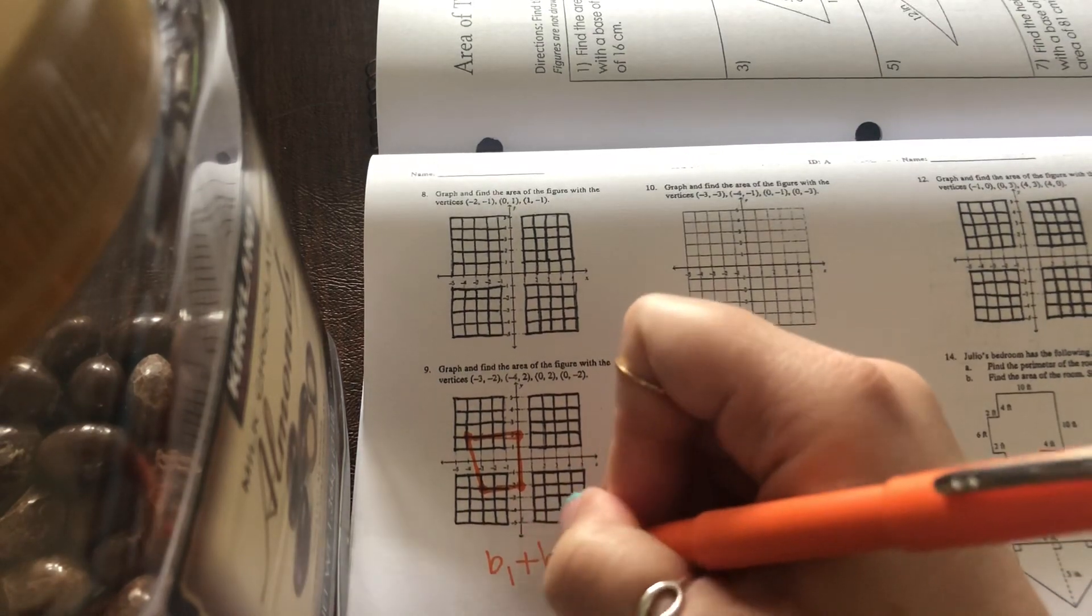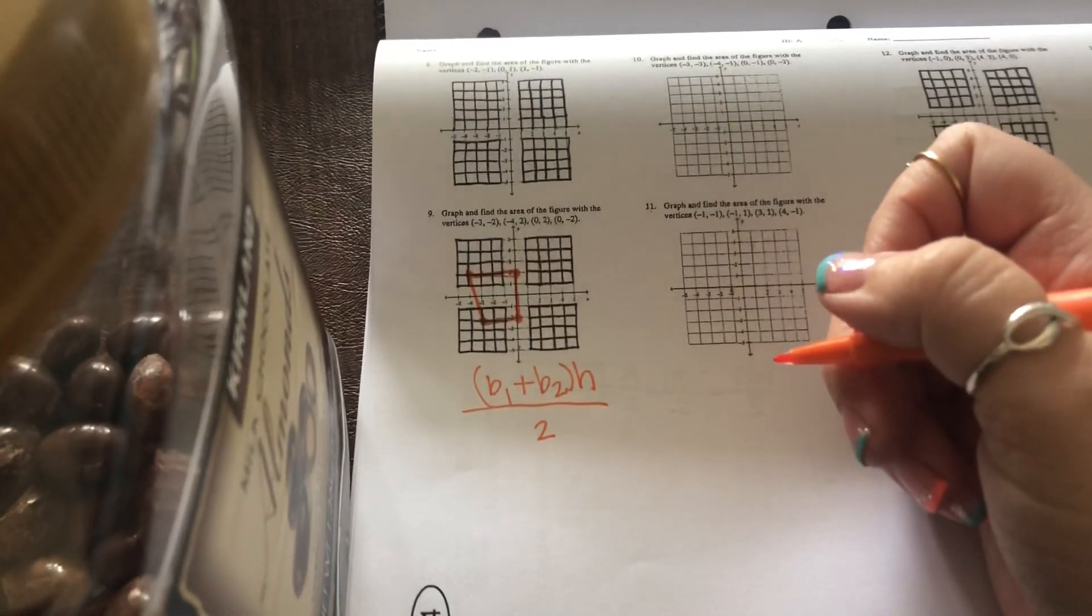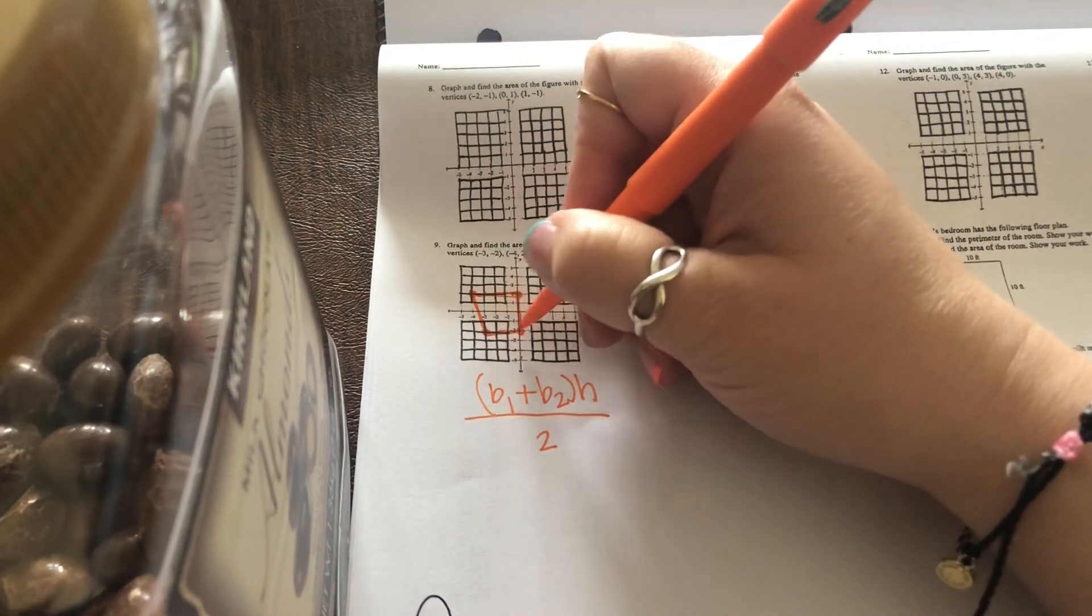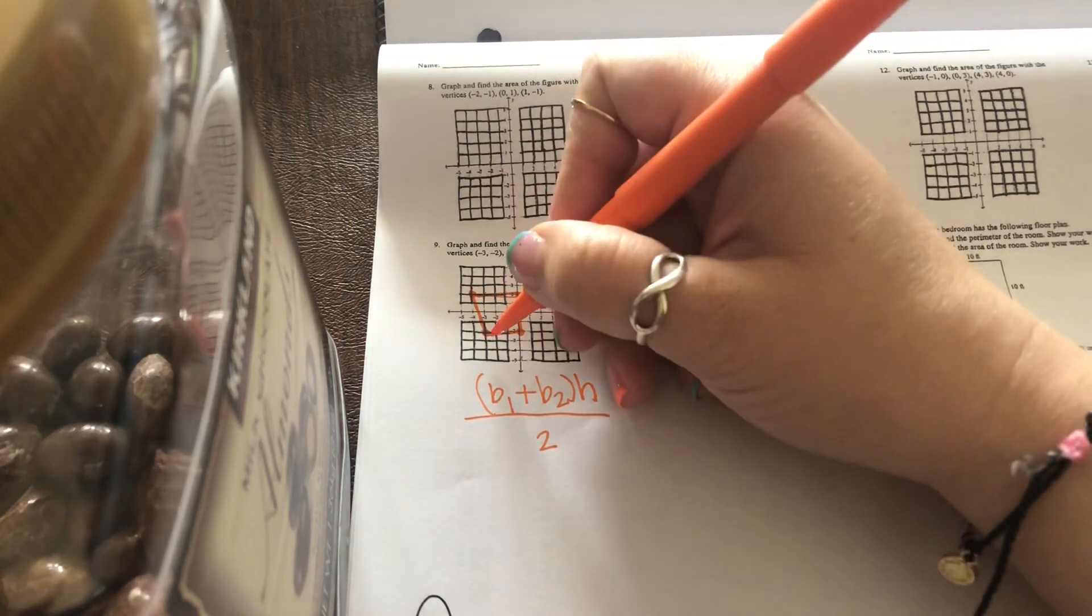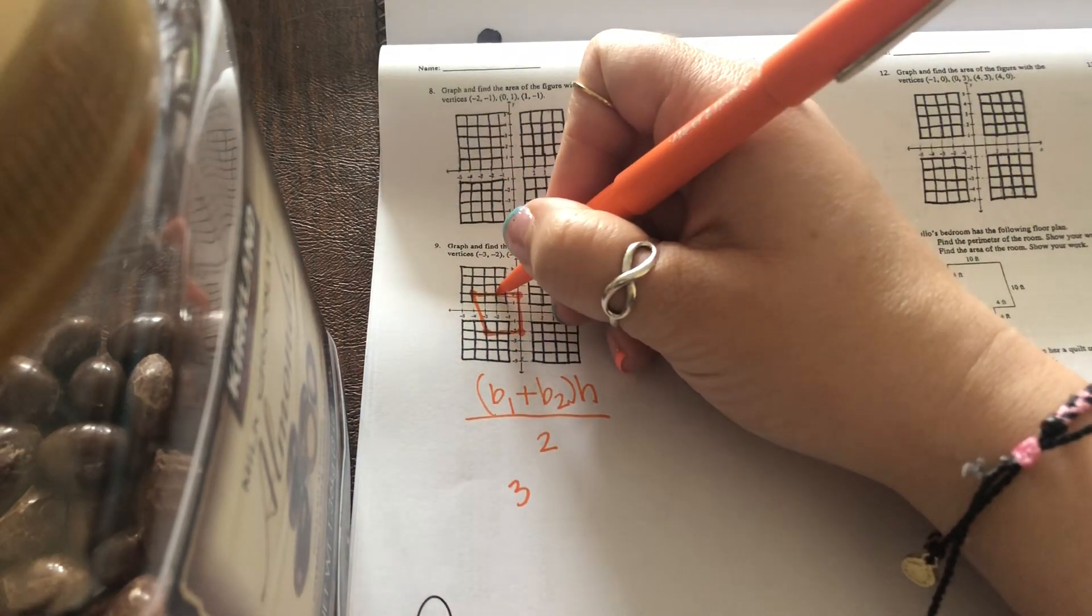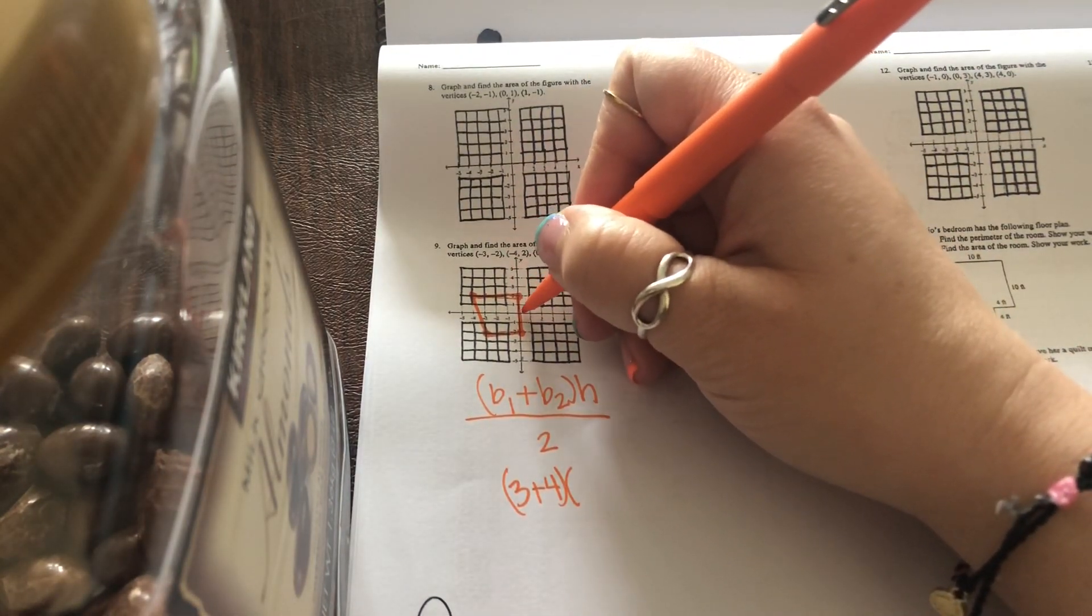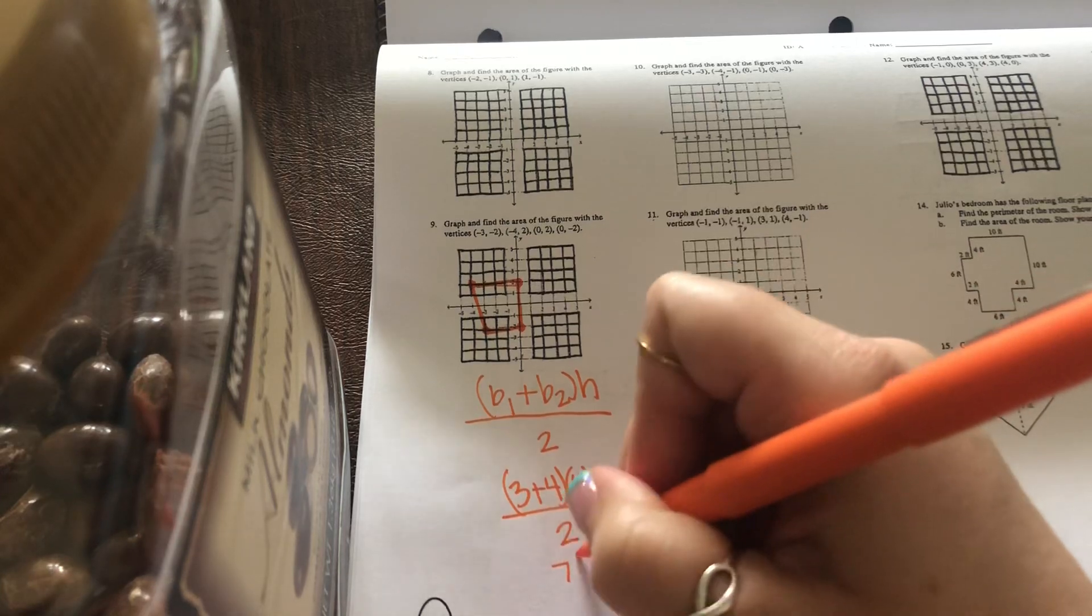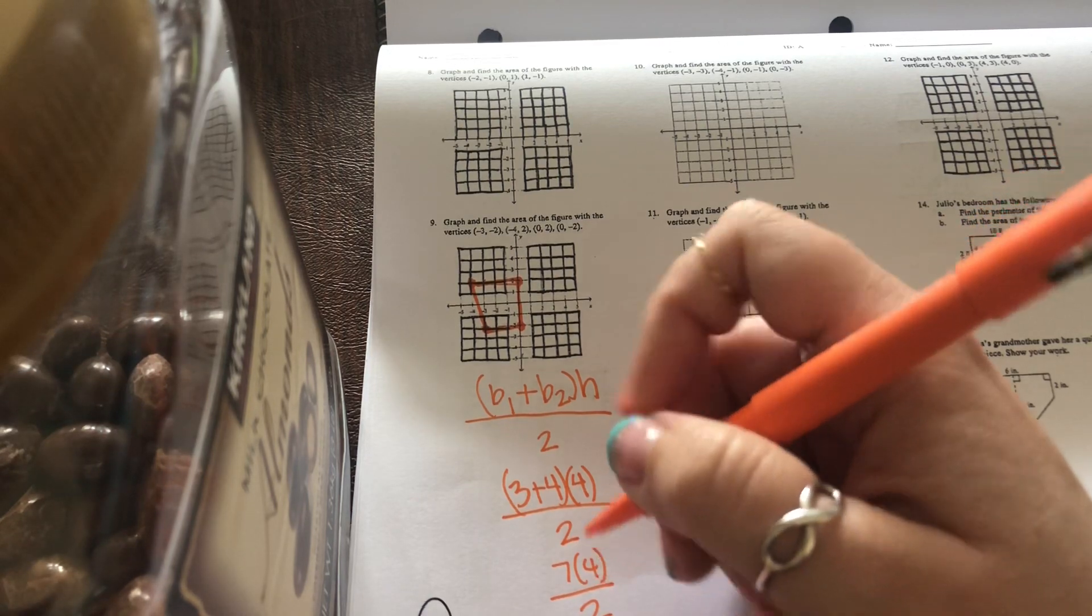So base one plus base two times height divided by two. If I go ahead and find those measurements, remember, you can always pause the video and try to work it out yourself first before we go through it together. Well, this base, and the bases are always the ones that are parallel to each other. So it's here and here. These aren't the parallel sides. So those aren't your bases. It's one, two, three for one base and one, two, three, four for your other base. It has a height of one, two, three, four. And you're going to divide that by two.